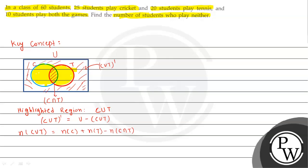The next formula we use is for the number of students who do not play any game, which is C union T complement. This equals the total number of students in the universal set minus C union T.